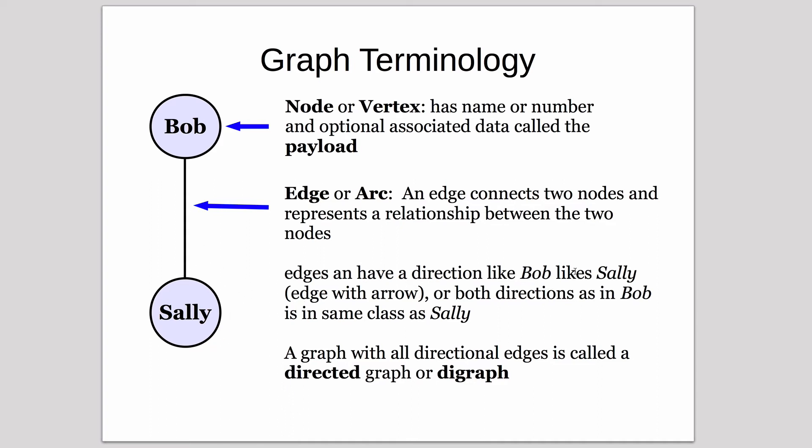Edges can have a direction, like Bob likes Sally. In that case, the edge will have an arrow on one end pointing from Bob to Sally. Or they represent equality in both directions, such as Bob is in the same class as Sally or Bob knows Sally. In a graph, all the edges are either directional or not directional. If they're all directional, it's called a directed graph or digraph.